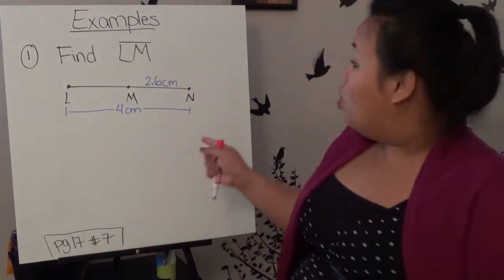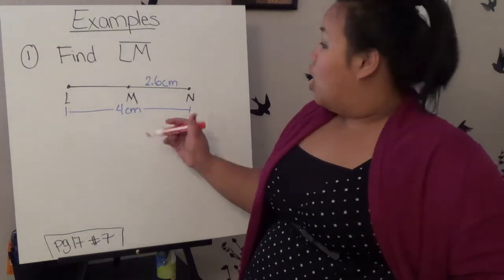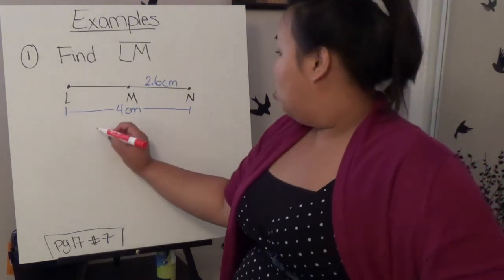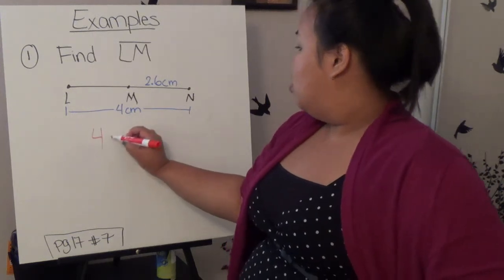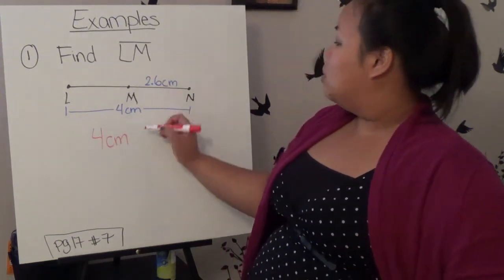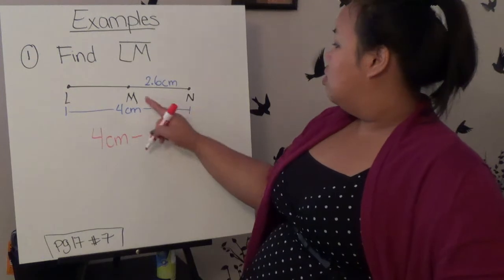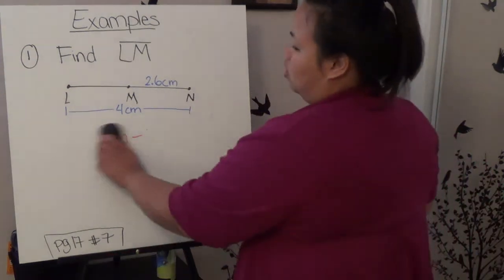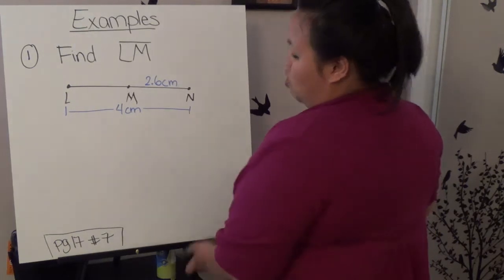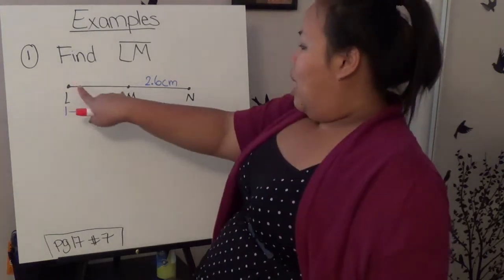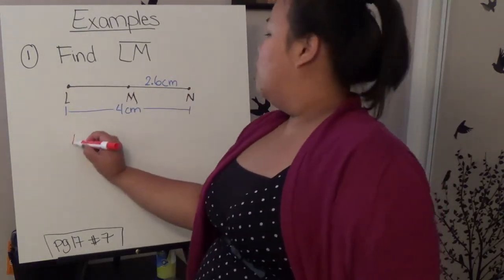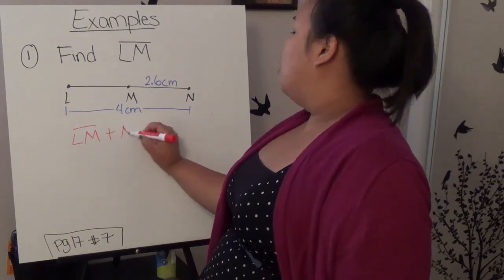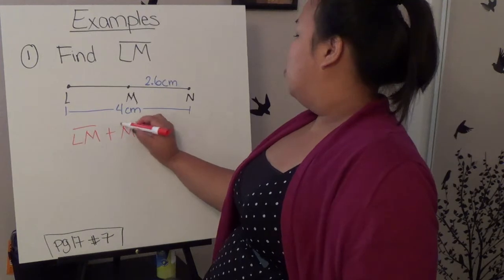So basically, in order for me to find this segment, all I have to do is take the whole line, which is 4, and I'm going to subtract it by MN, which is 2.6. So it looks like this. Let me show you in letters. You know that LM and MN, if I add them together, will give me the whole thing.